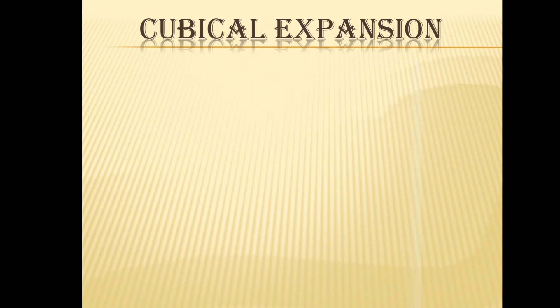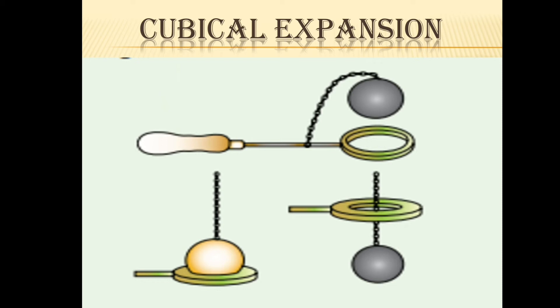For cubical expansion, we take a metal ring and a metal ball of such size that the ball passes through the ring. Before heating, the ball easily passes through the ring. After heating the ball and trying to pass it through the ring, it does not pass — it fits into the ring. This is because solids expand due to heat. The ball expands in volume and cannot pass through the ring. When the ball cools down, it contracts and comes back to its original size, so it passes through the ring again. Solids expand due to heat and return to their original state when heat is removed.